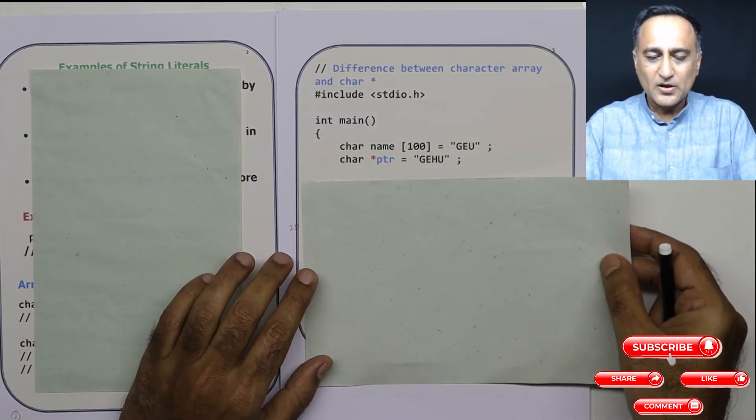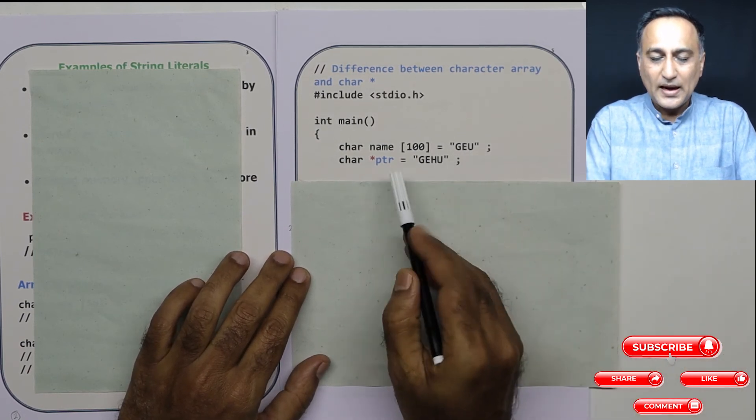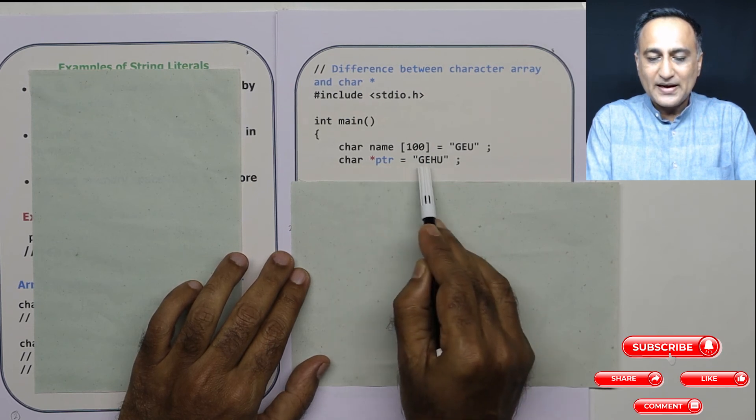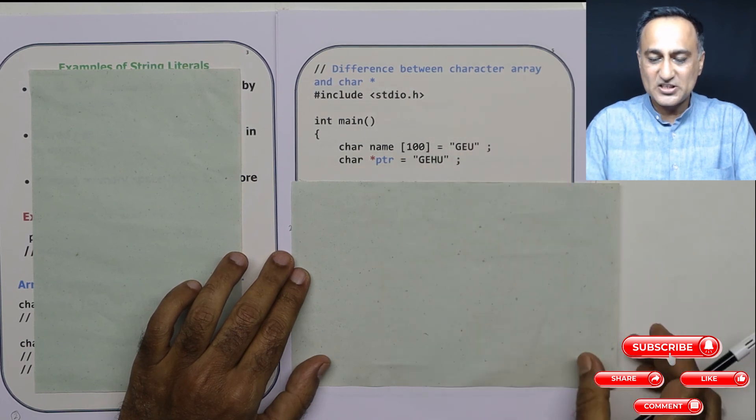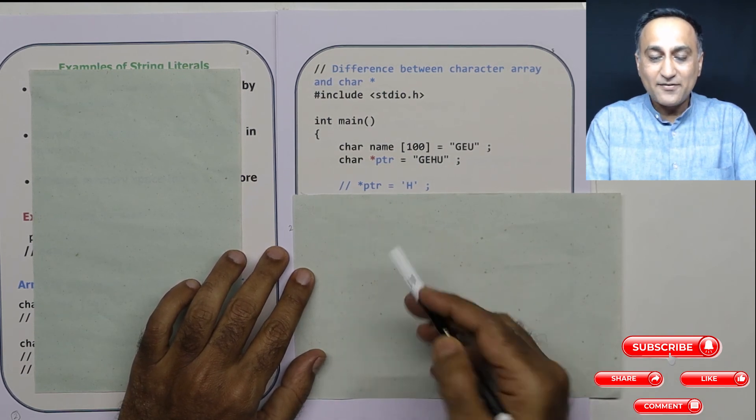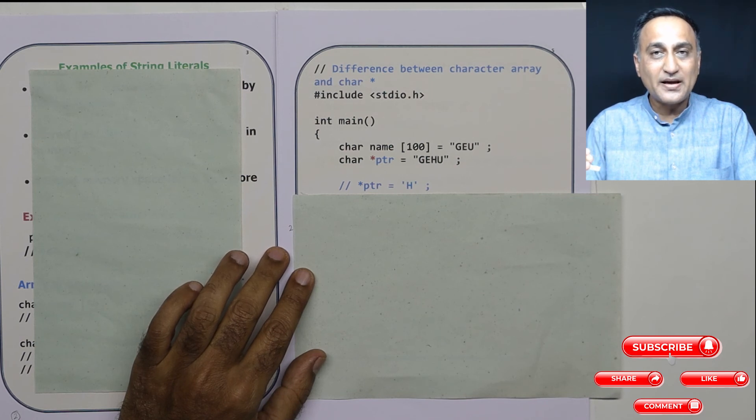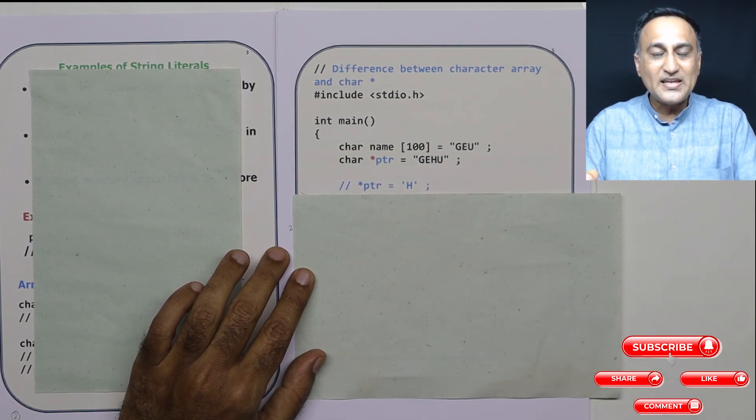Here if you can see, I have declared name as "geu" and pointer to a character type of data as "gehu". This is to show you the difference between character array and char star. Now what I have put in comments, if I take this comment out and if I try to execute it during runtime on the online gdb compiler, you will get segmentation fault error because this particular "gehu" is stored in an area of memory which is read only or non-modifiable.